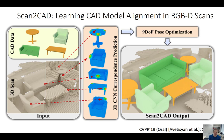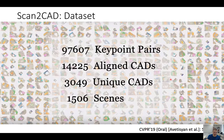We created the Scan2CAD dataset: we took scanning scenes and annotated them with CAD models, knowing which CAD model matches best, with respective nine-DOF poses — three for rotation, three for translation, three for scale. We have the CAD database, 3D scans, and respective outputs. The dataset has about 97,000 keypoints, roughly 100,000 keypoint pairs, aligned CADs, about 3,000 unique CADs, and 1,500 scenes with many models aligned. This enables machine learning for scan-to-CAD alignment.